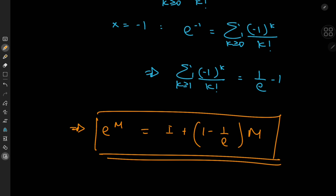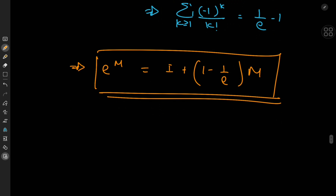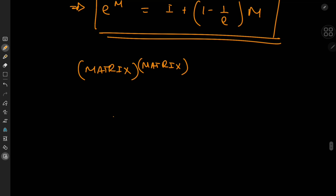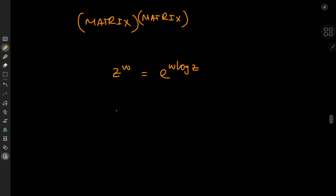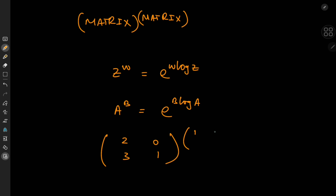So we know how to take the logarithm of a matrix and how to use the matrix exponential. This lets us tackle something that looks ridiculous at first sight: raising a matrix to another matrix. Just as for complex numbers z^w = e^(w log z), we define A^B = e^(B times log A). As homework, evaluate [[2,3],[0,1]] raised to [[1,3],[0,2]] using the ideas from this video, and comment the matrix you get.